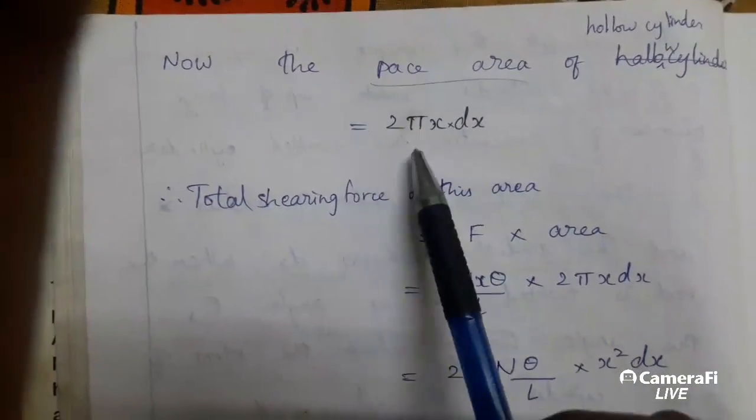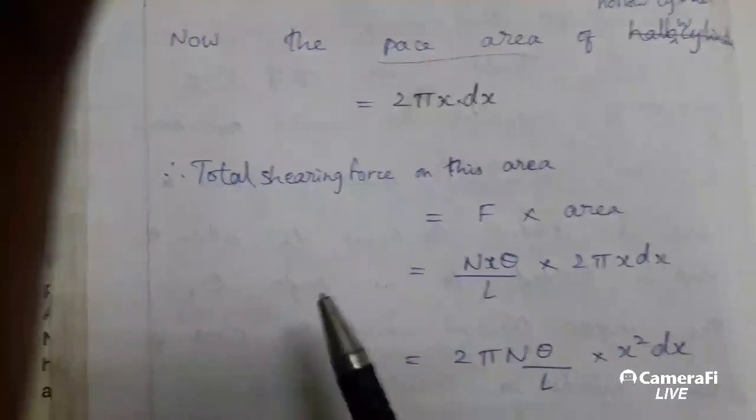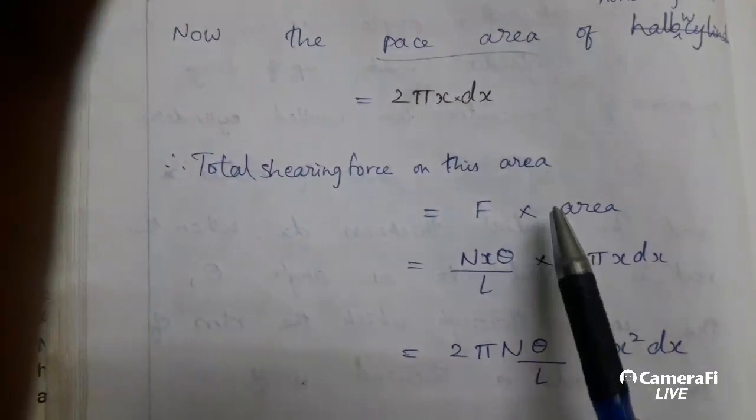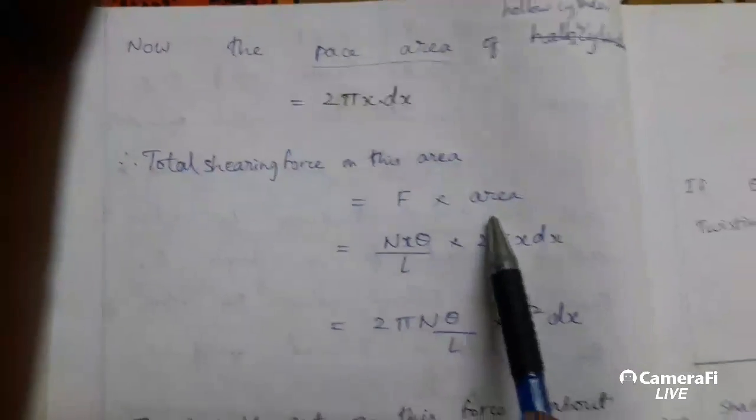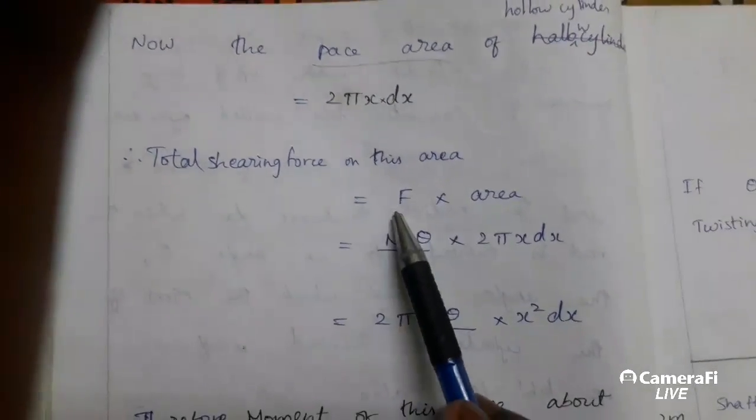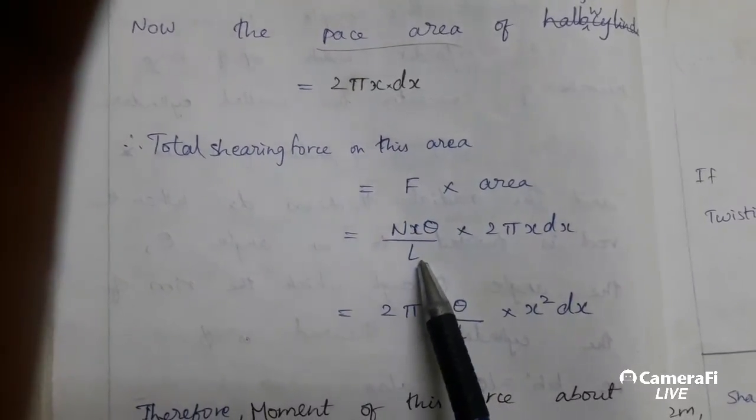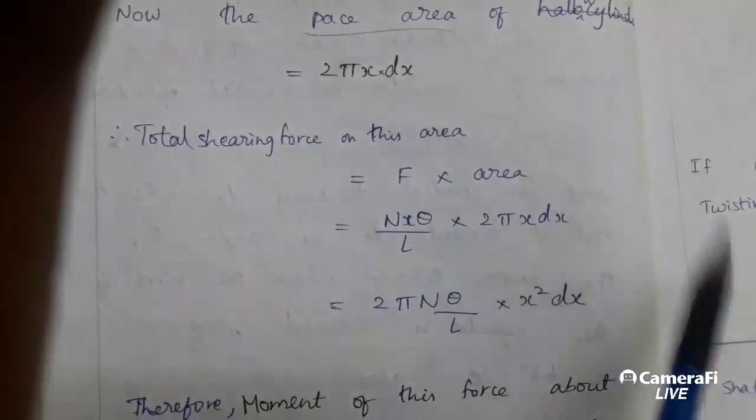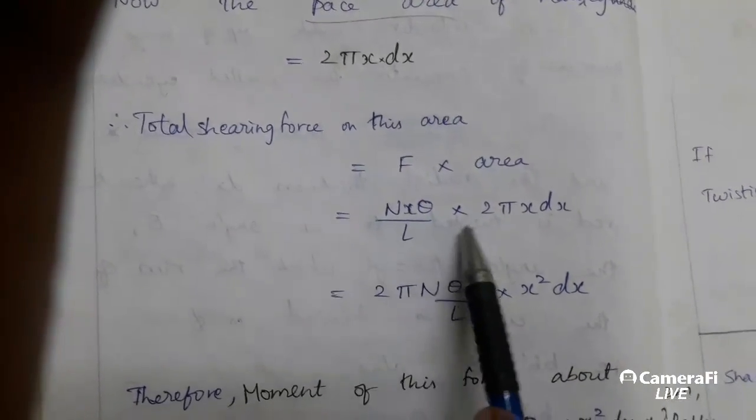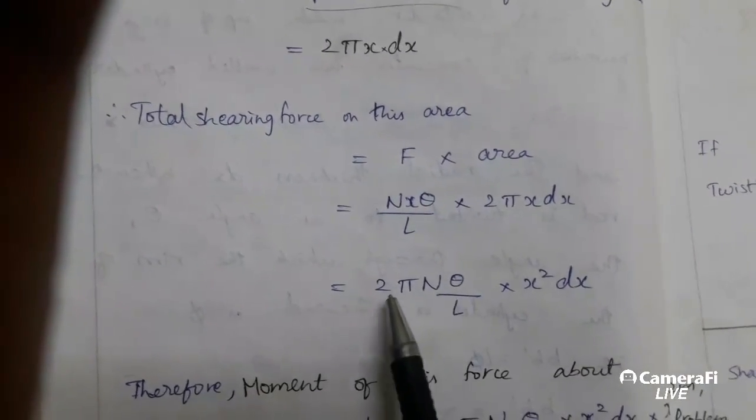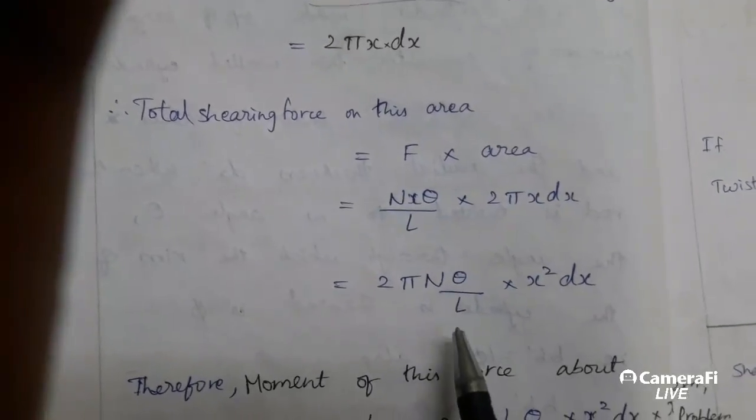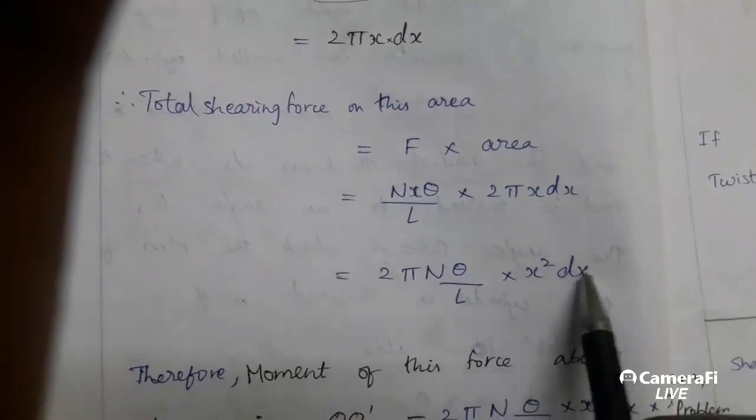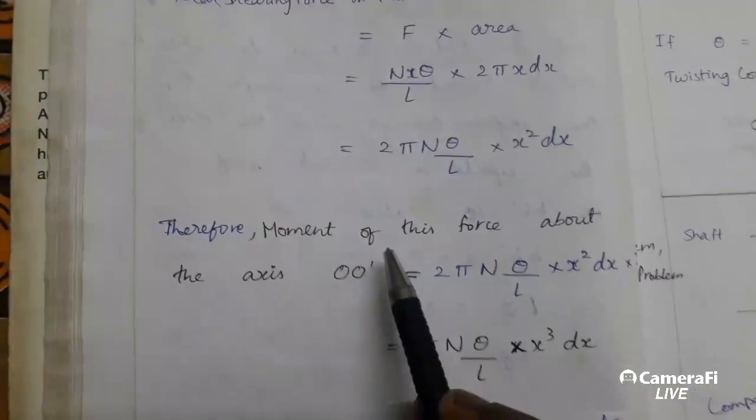Now the base area of the hollow cylinder is 2 pi X DX. Total shearing force in that area equals force times area. The force is N X theta by L, into the area as 2 pi X DX. Then the final answer becomes 2 pi N theta by L into X squared DX.